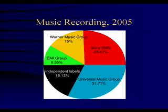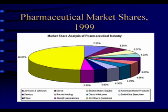In music recording, it's a fairly limited number of players. Sony BMG used to be two companies — Sony of Japan and Bertelsmann Music Group of Germany — and they merged a while back. Warner Music Group is a fairly large one, and so is Universal Music Group and EMI, based in the UK. In the pharmaceutical industry, it's a little more competitive, but still dominated by giant firms like Eli Lilly, Merck, Abbott, Sandoz, Pfizer, GlaxoSmithKline, and Bristol-Myers Squibb.